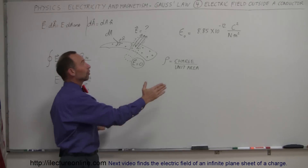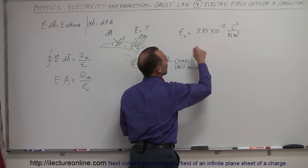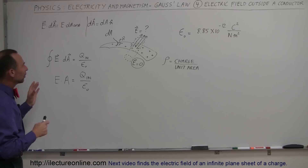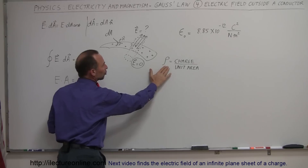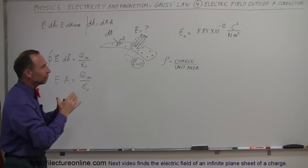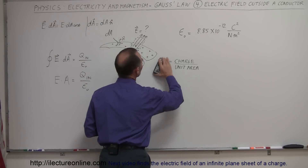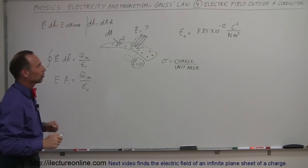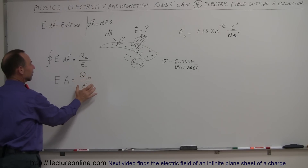Epsilon sub nought, the permittivity of free space, is equal to 8.85 times 10 to the minus 12 coulombs squared per newton per meter squared. Now we need to think about how much charge is inside. That depends on the charge density — here we're talking about the surface density, not the volume density. We use the letter sigma to signify the surface charge density.